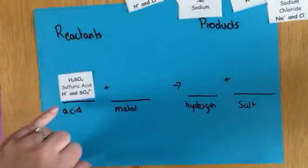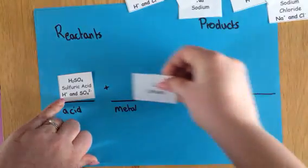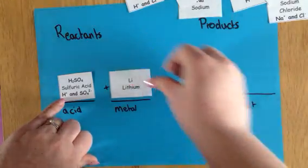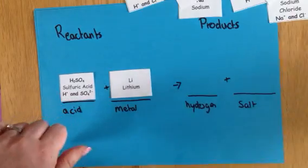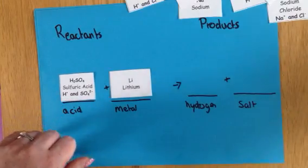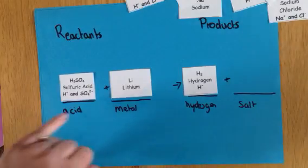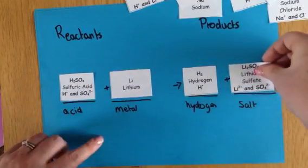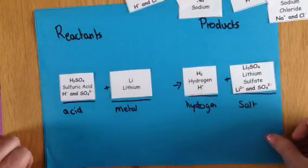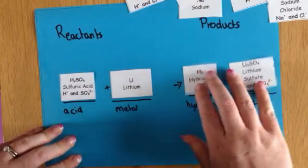We have sulfuric acid — again these hydrogen ions — that's a really key thing you need to remember when we're talking about acids. We're reacting it with lithium. The hydrogen ions go off as a gas, the sulphate and the lithium react together and they're going to make lithium sulphate.